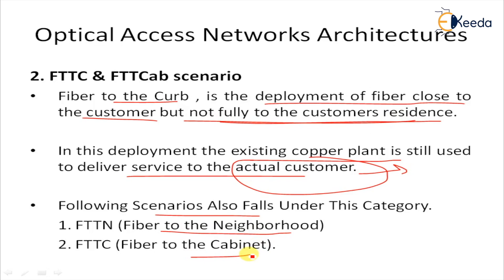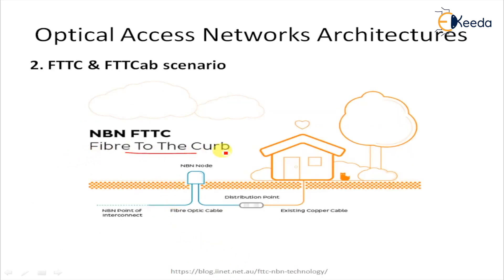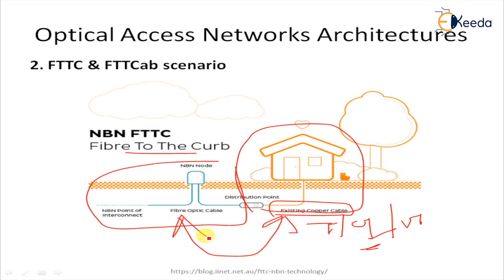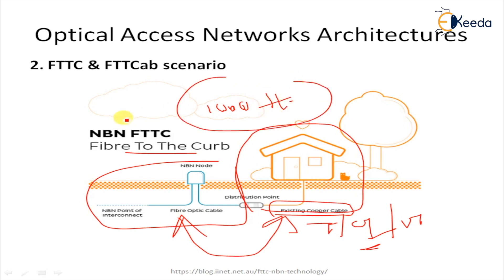In the FTTC diagram, fiber is provided up to the cabinet, and the rest uses existing copper network — twisted pair or unshielded twisted pair cable — to connect to the home user. FTTC uses coaxial and twisted pair to send signals from the curb to the home. FTTC can serve several customers within a thousand feet of the cabinet.